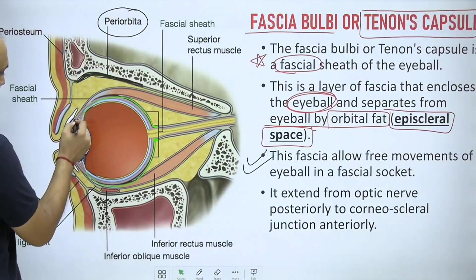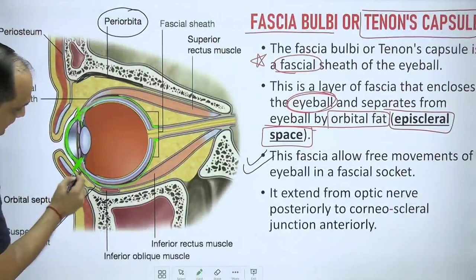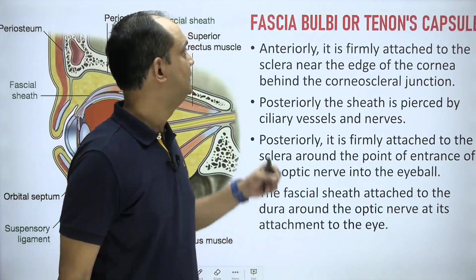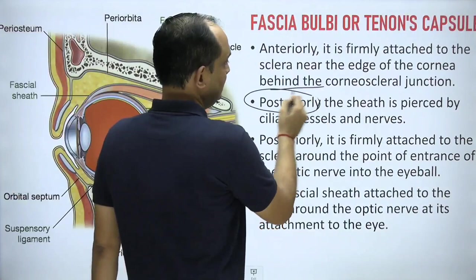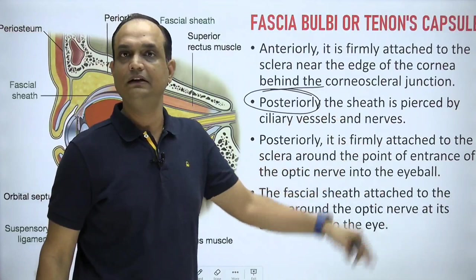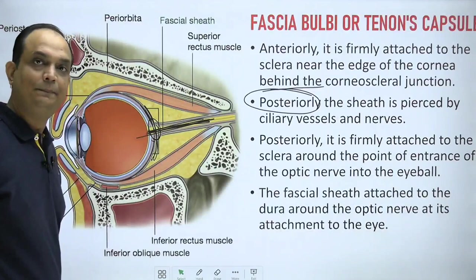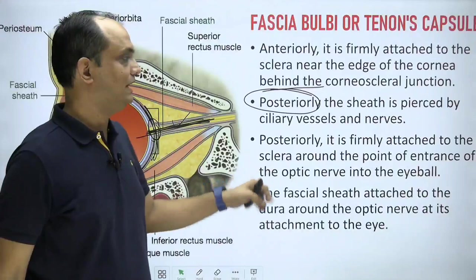The limbus is the corneoscleral junction — where the cornea meets the sclera. The tenons capsule extends anteriorly only up to this corneoscleral junction and is firmly attached to the sclera near the edge of the cornea, behind the corneoscleral junction. Posteriorly, the sheath is pierced by the ciliary arteries, vessels, and some nerves. The major structure piercing this capsule posteriorly is the optic nerve, along with the short and long ciliary nerves and some ciliary vessels.